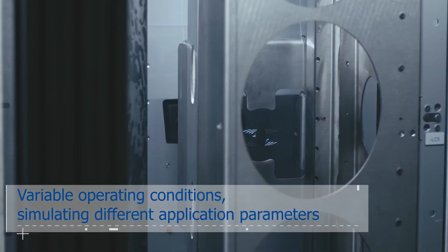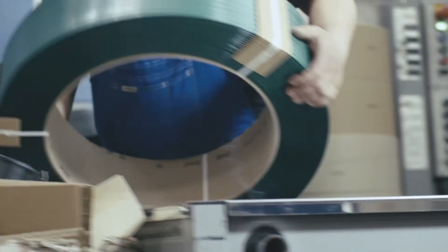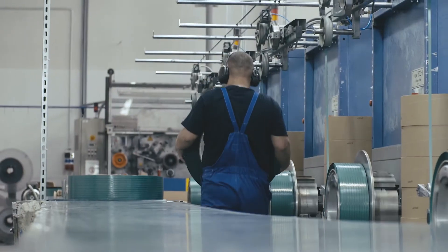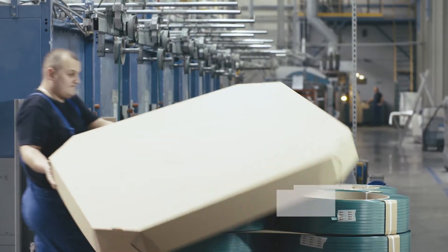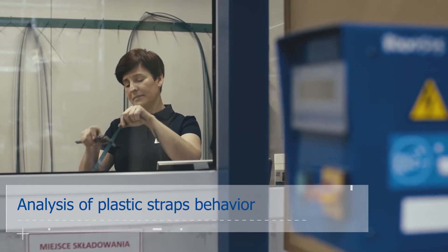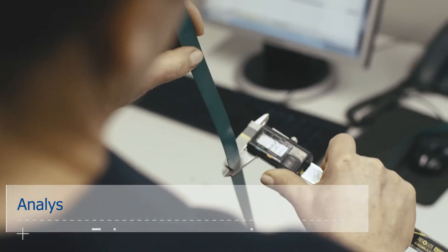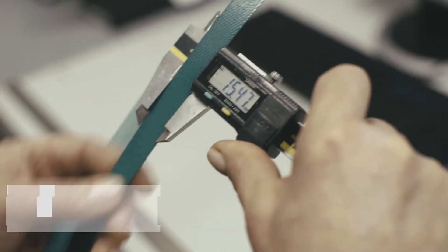For plastic straps, key application factors such as joint strength and strap tension measurements are controlled even on-site with the patented Mailis portable equipment to maximize load security.